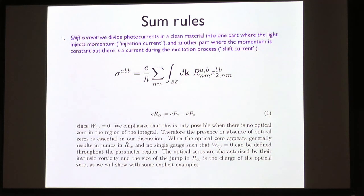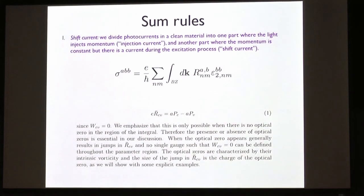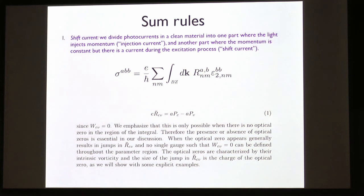This is an expression for the nonlinear conductivity — it has two electric fields and one current, hence three indices. The shift current is written as a shift vector (the distance the electron moves) times the imaginary part of the dielectric constant (related to how many transitions are happening). If I average the shift vector R over the Brillouin zone, it's just the polarization difference between the upper and lower bands. In 1D this is straightforward; in higher dimensions there are many zeros and it requires more calculation.